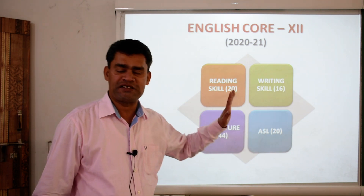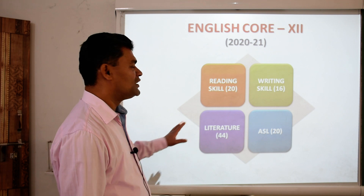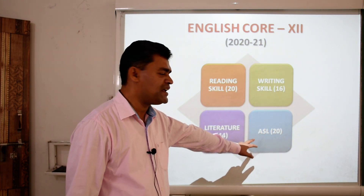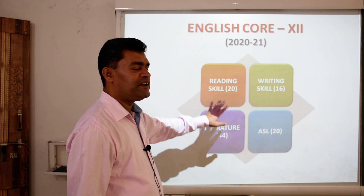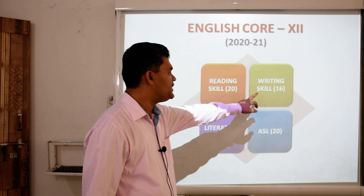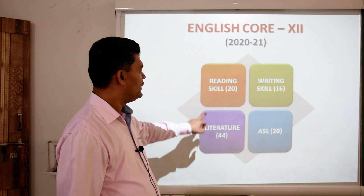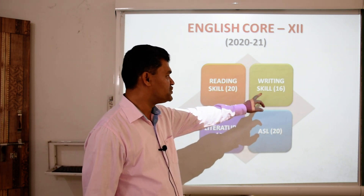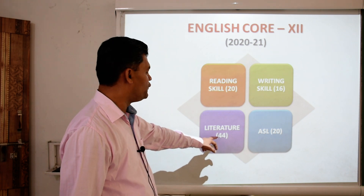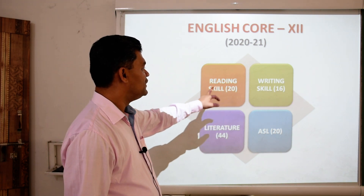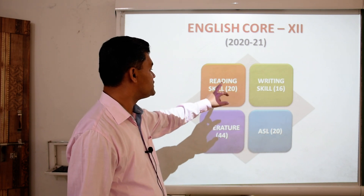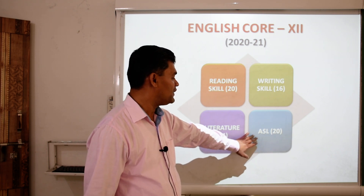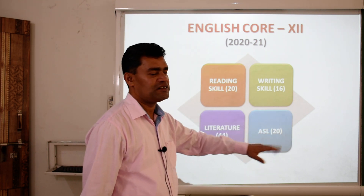Now we have 100 marks. Out of 100 marks, we have 80 with pen paper test and 20 internal assessment in the form of ASL. Out of this 80, we have reading skill, writing skill, and literature. Reading skill covers 20 marks, writing skill 16 marks, and literature 44 marks. So all these three skills — reading, writing, and literature — amount to 80 marks, and assessment of speaking and listening is for 20 marks as internal assessment.